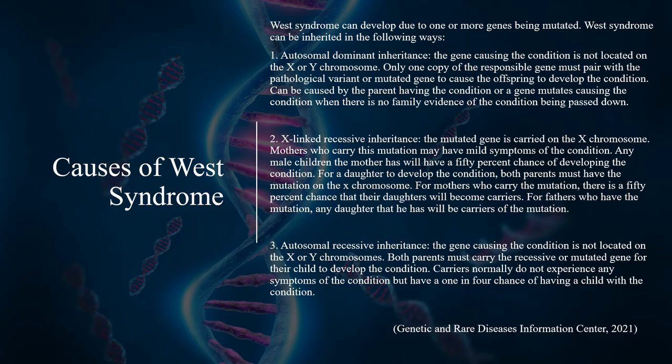West Syndrome can develop due to one or more genes being mutated, and can be inherited in several ways. In autosomal dominant inheritance, the gene causing the condition is not located on the X or Y chromosome. Only one copy of the responsible gene must pair with the mutated gene to cause the offspring to develop the condition. It can also be caused by a new gene mutation with no prior family history.